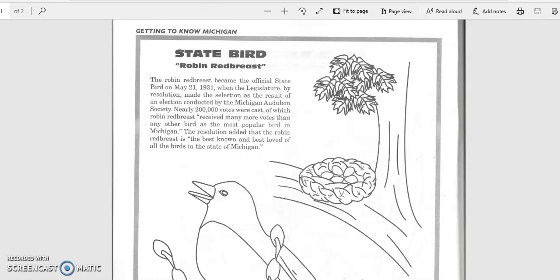This is a reading from Getting to Know Michigan, a coloring book about Michigan facts and history. Today's focus will be about the state bird, the Robin Redbreast.